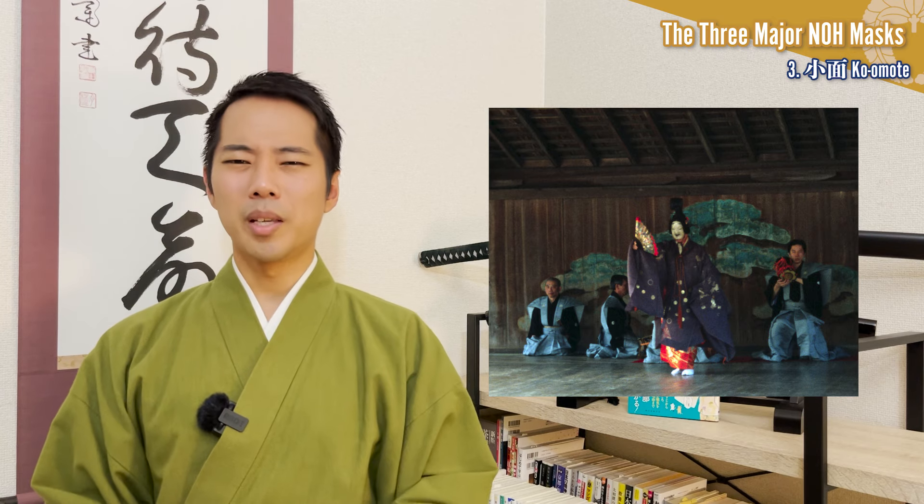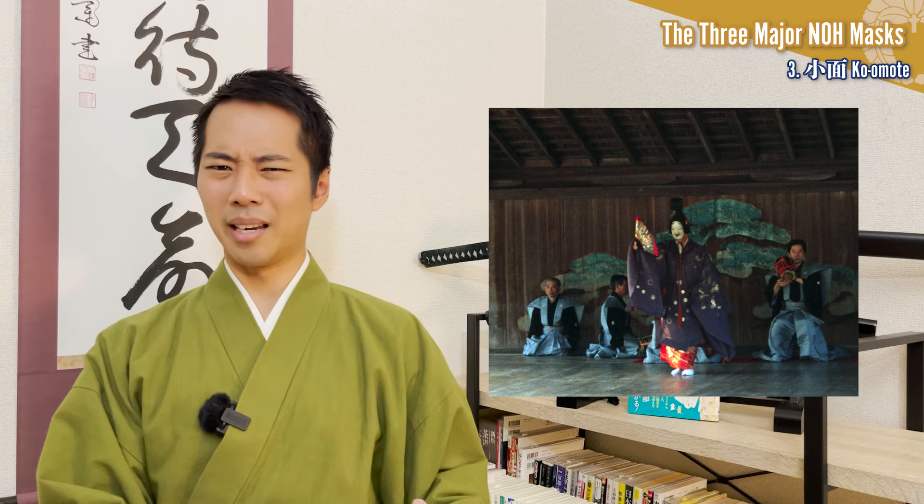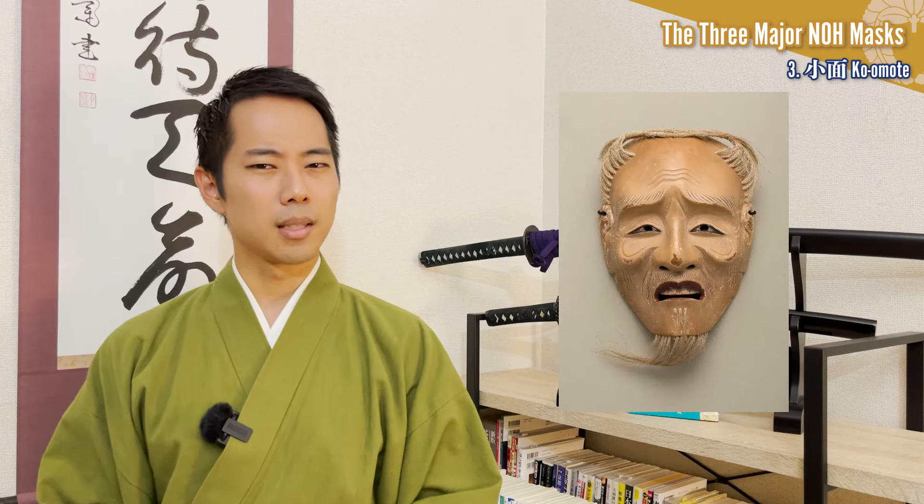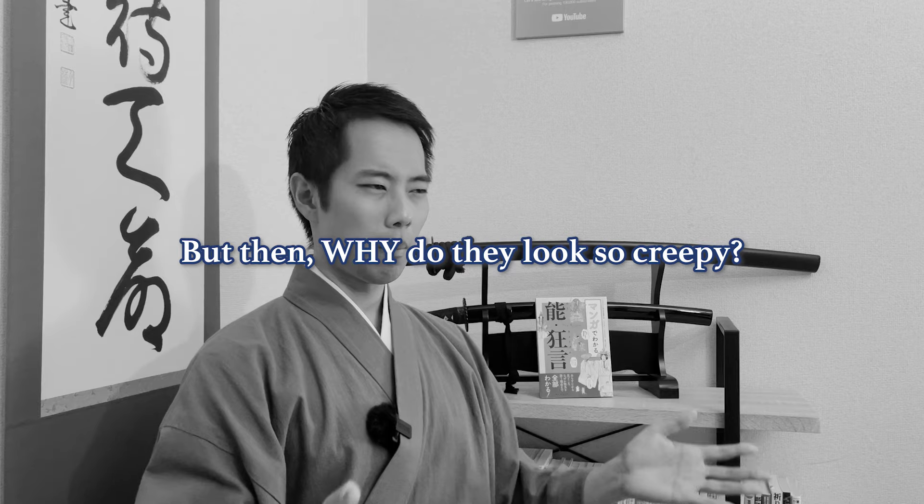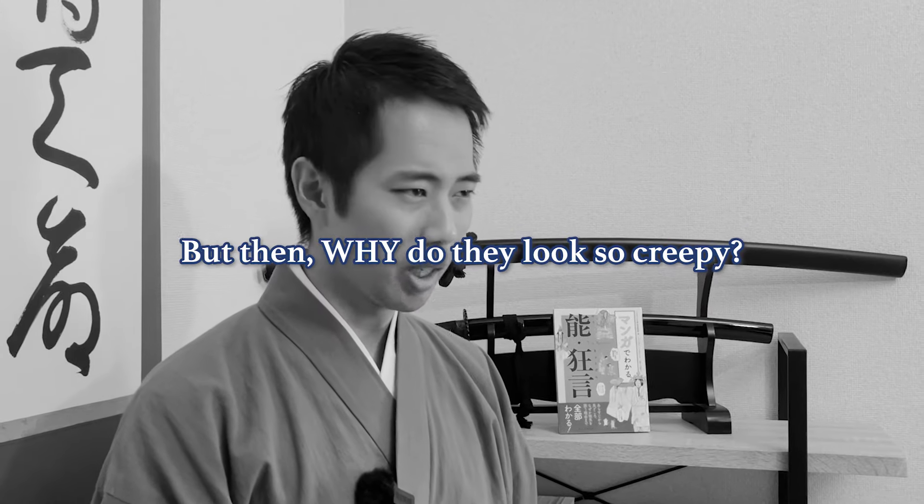Most of the time, the Komote does not represent anything negative or haunting. The main character that my master is acting as in the video inside the description box is actually wearing the Komote to represent a female snow angel. But not just the Komote — the Kojo that represents an old man, or Chūjo that represents a noble man, all look pretty creepy too. But then why do they have to look so creepy? Let's talk about today's main topic in the last chapter.